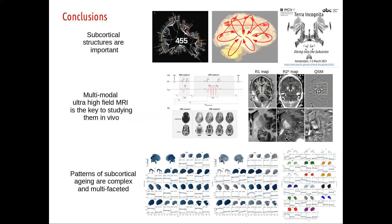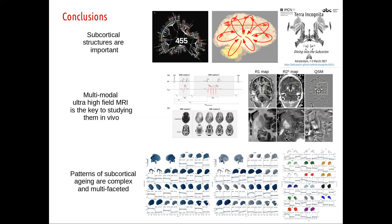In conclusion, I would argue that subcortical structures are important in many different ways; that multimodal ultra-high field MRI is definitely the key to studying them in vivo; that 7 Tesla is really getting mature so we can start making studies with large numbers of subjects; and that the patterns we observe are multifaceted — it's not just iron accumulation, not just demyelination, there's a lot of interplay and variability in those structures that we tend to lump together for convenience.